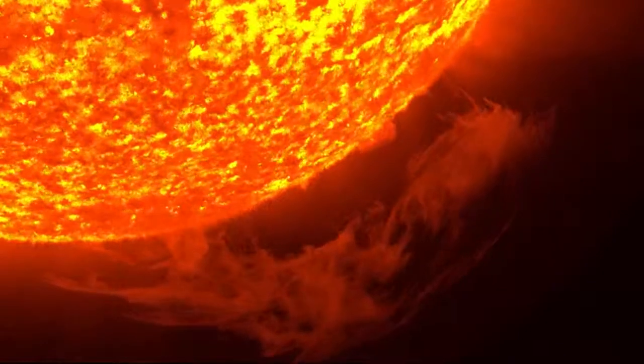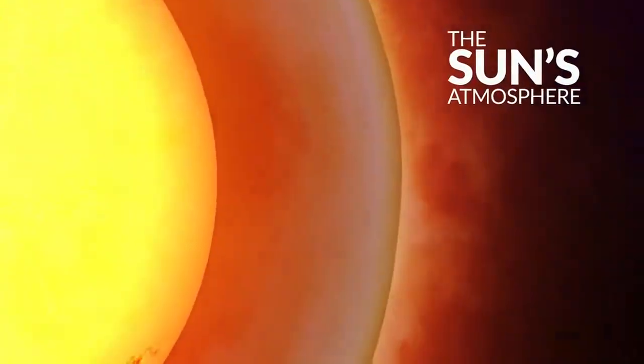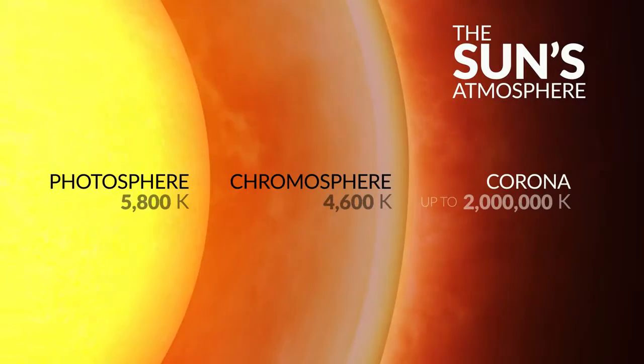Amazingly, this outer atmospheric layer reaches temperatures of 1 to 2 million Kelvin, being superheated by the solar wind and the magnetic storms.